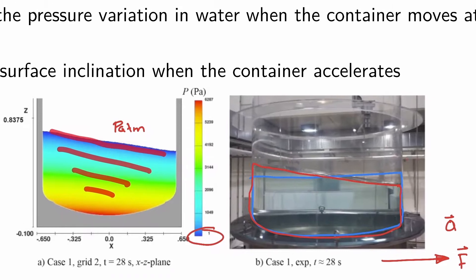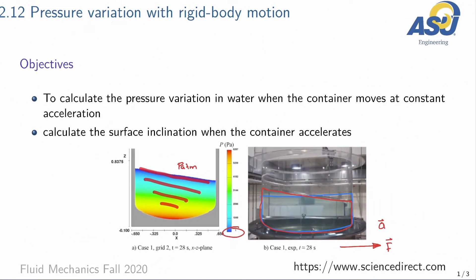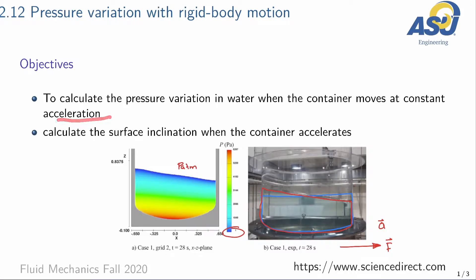The objective of this section is to calculate the pressure variation in water or any other fluid when the container moves at constant acceleration. We also want to calculate the surface inclination — that is, we want to calculate this slope.